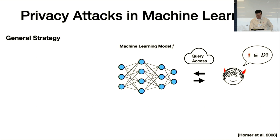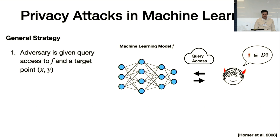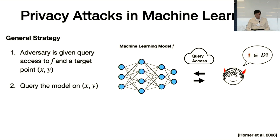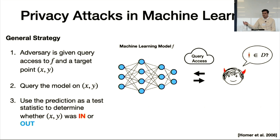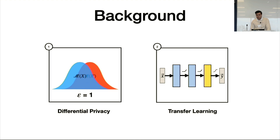In membership inference, the adversary is given a data point and must determine whether it was included in the training dataset D or not. The general strategy is that the adversary queries the model on a challenge point and uses the response — usually a prediction vector — as a test statistic to determine whether the challenge point was in the training set, denoted as 'in', or out.